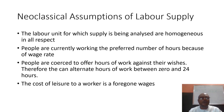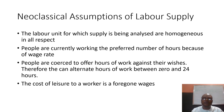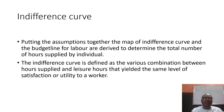The second assumption is that people are currently working their preferred number of hours because of wage rates. People are working because of money, though behavioral scientists may argue otherwise. Third, people are not coerced to offer hours of work against their will, so you can alternate hours of work from zero to 24 hours. The cost of leisure to a worker is therefore the forgone wages.